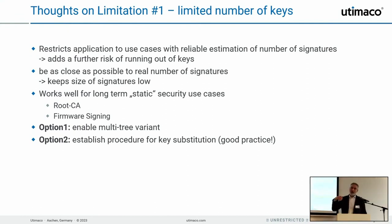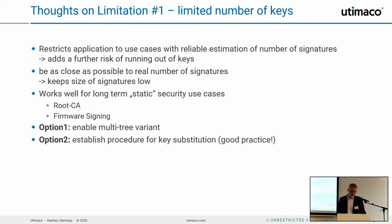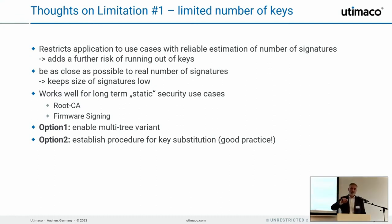Stateful hash-based signatures also work for ad hoc scenarios where you use a key for maybe 20 signatures, something really agile — the state handling is not a big concern then. There are two options to work around the signature limit. First, you can enhance the tree structure with another layer of trees — a hyper-tree or forest — where leaves sign the root of another tree. The drawback is enlarged signatures and loss of efficiency. Second, and what people typically do first, is change the key after exhausting all signatures.